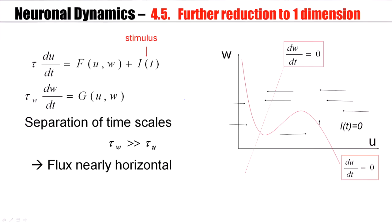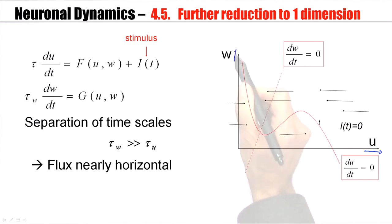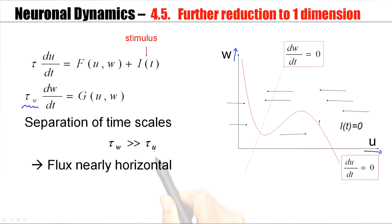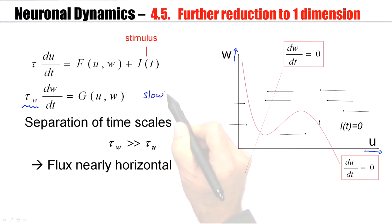We have seen a class of two-dimensional neuron models that can be analyzed in the phase plane. The first variable is the voltage variable on the horizontal axis, and the second is the auxiliary variable W on the vertical axis. Separation of time scales means that the time constant for the second variable is much slower than that of the voltage — W is our slow variable.